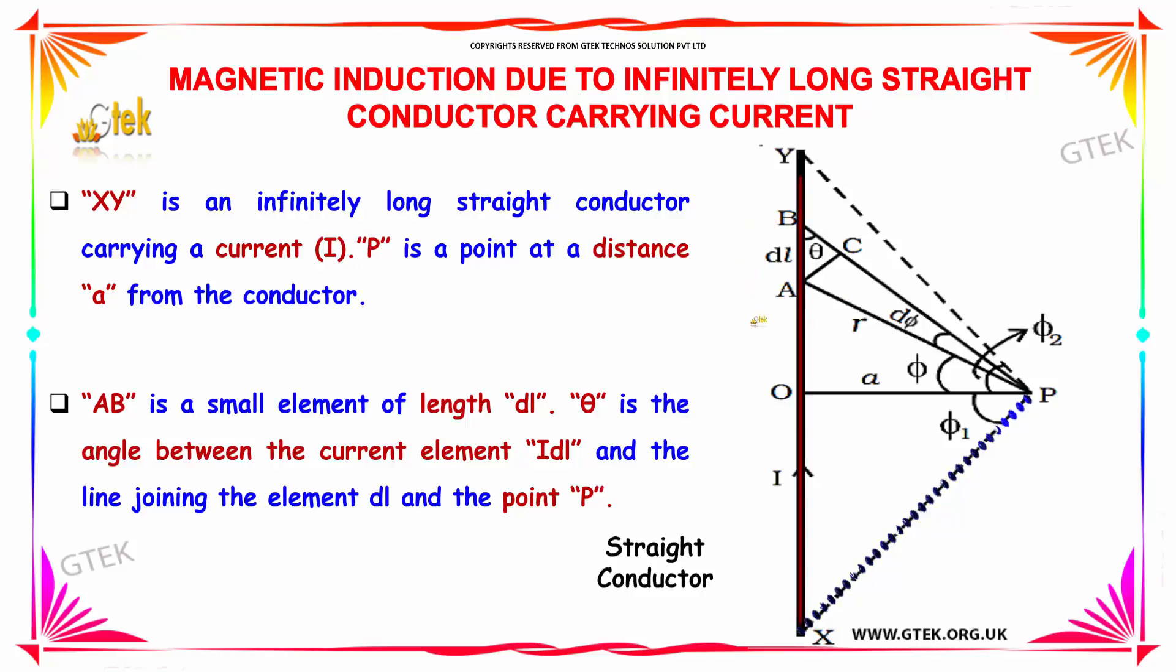AB is a small element of length dl, and theta is the angle between the straight conductor and a line which is connecting P.